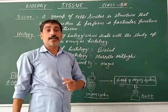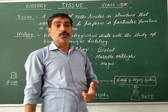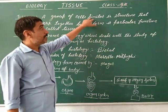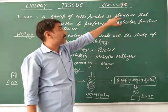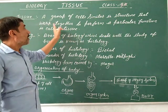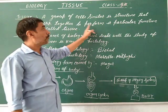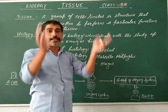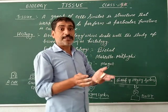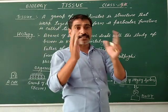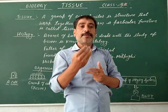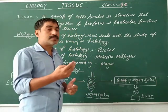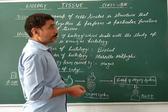First we know about what is tissue. Tissue is a group of cells similar in structure that work together to perform a particular function. This is a group of cells which have similar structure and perform a specific function. This is called tissue.